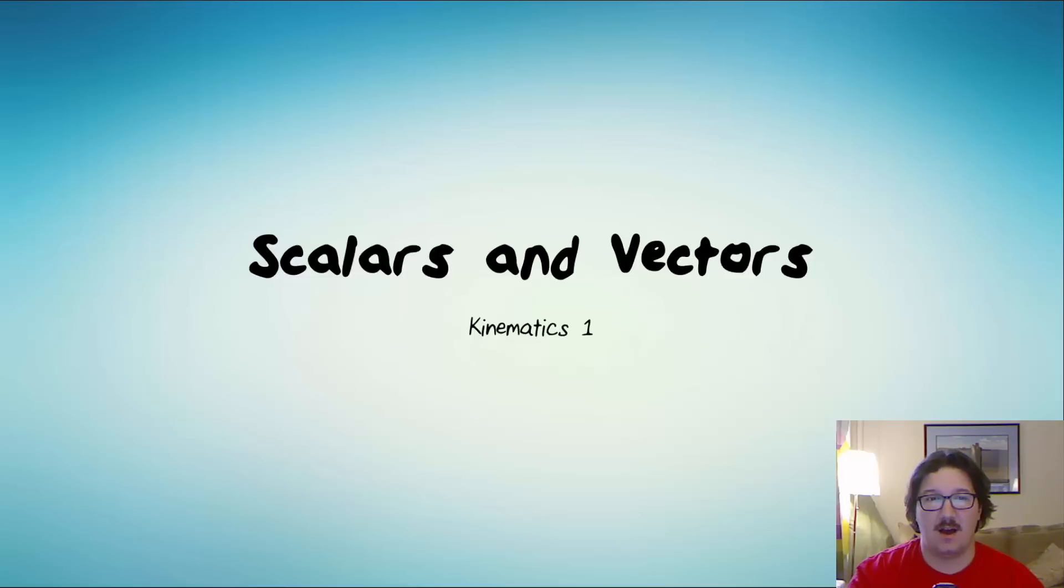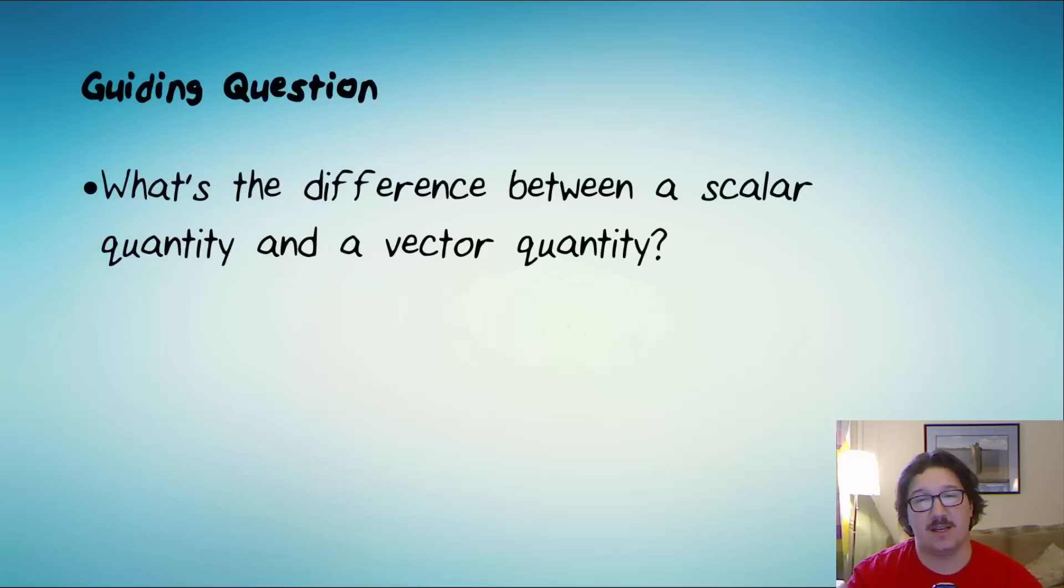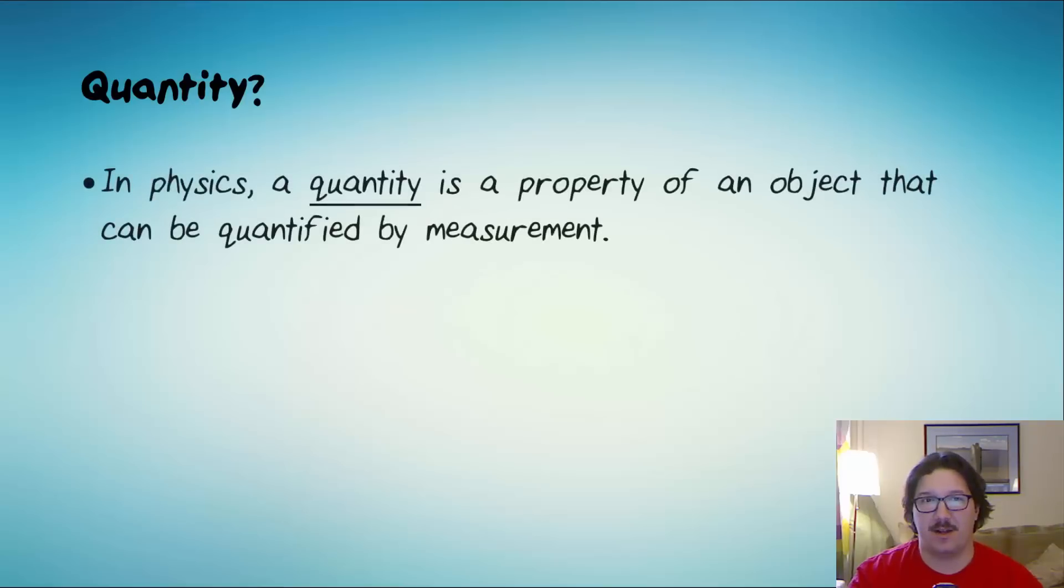Okay, into the first lesson, which is called scalars and vectors. And the guiding question for this lesson is what's the difference between a scalar quantity and a vector quantity? So first, why don't we define quantity? In physics, a quantity is a property of an object that can be quantified by measurement. So the number of books on a bookshelf or the length of your pencil are quantities. You can count those. You can measure those.